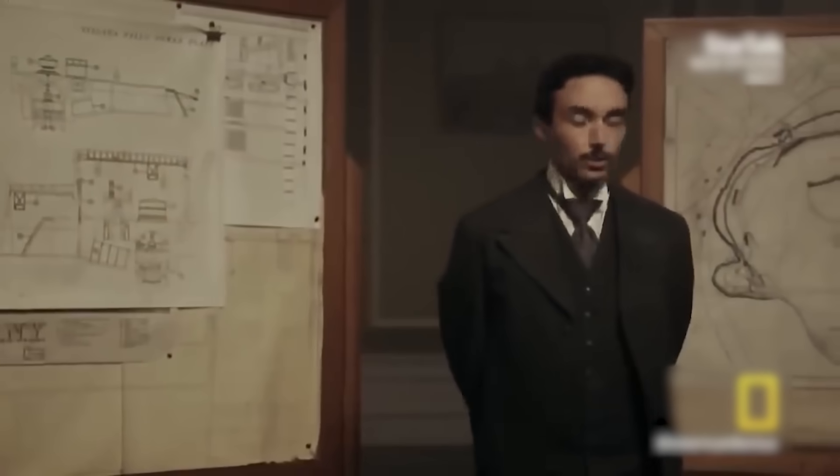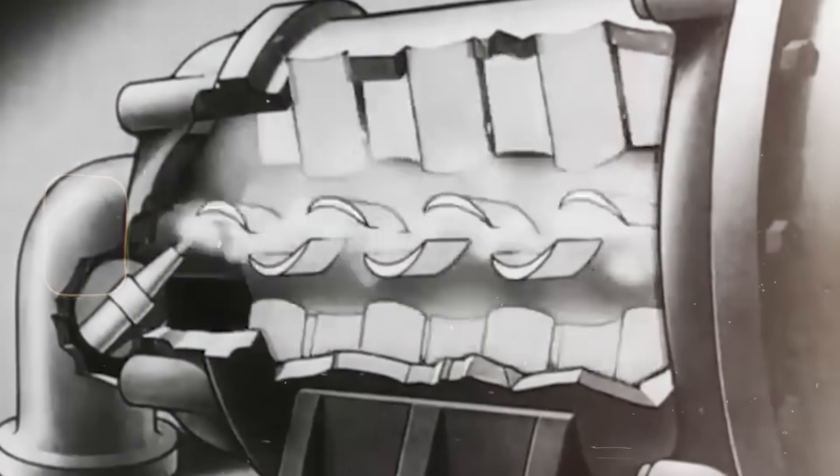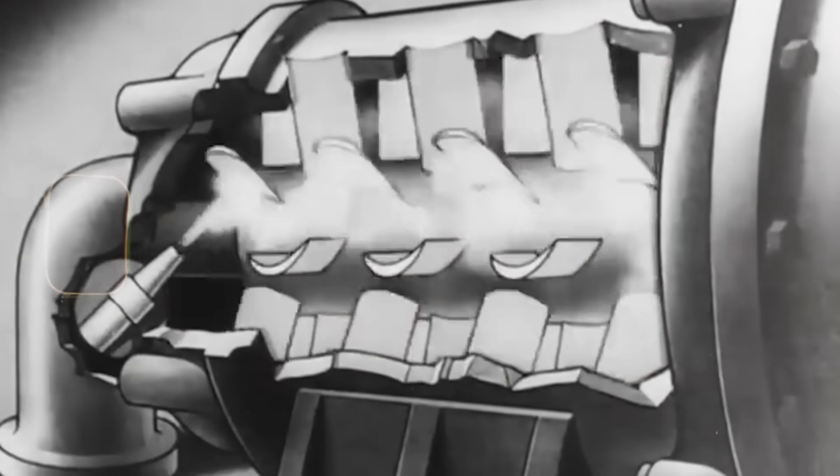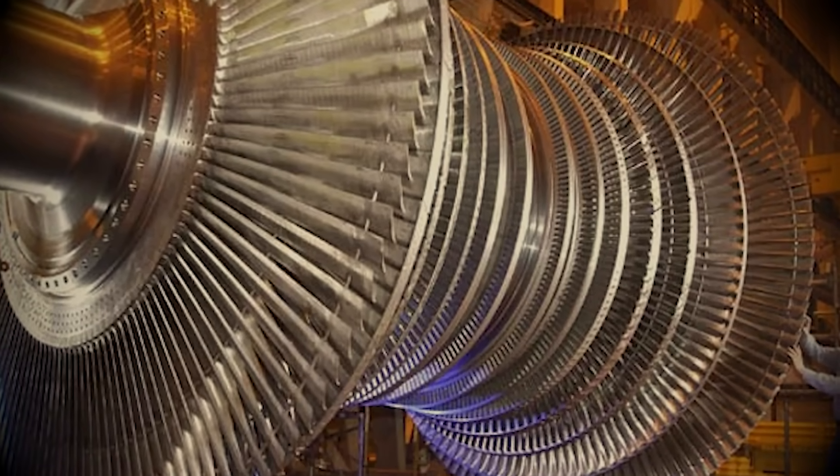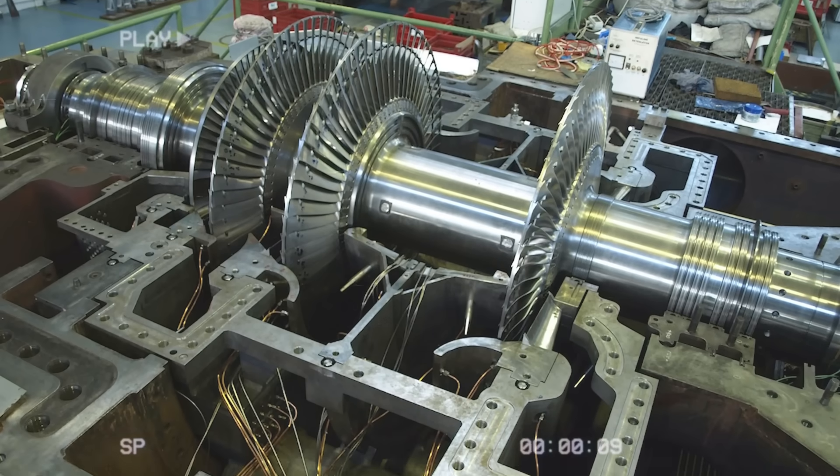Tesla's original vision of distributed, efficient energy, machines that could bring power to remote areas without massive infrastructure, is finally taking shape, not in a laboratory, but in a garage.